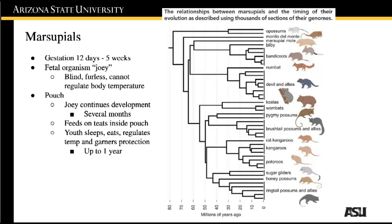As the joey finally begins to fully develop, it will emerge from the pouch for short stints to explore the world and learn things about becoming the organism that it is. During this time, it will also continue to sleep, eat, and regulate its body temperature in the pouch, going out for short stints and coming back. It also allows the joey to be protected from any dangers in its habitat. The marsupial joey will continue to live inside its mother's pouch for up to one year.